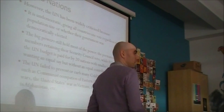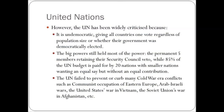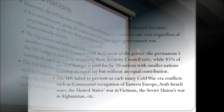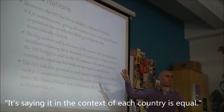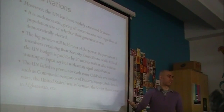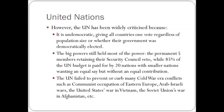That said, there are still criticisms of the UN. It's undemocratic — all countries get one vote regardless of population size or whether their government was democratically elected. So democratically functioning countries get the same say as dictatorships. Additionally, the big powers still hold most of the power: the permanent five members retain their Security Council veto, giving them more power than any other country.